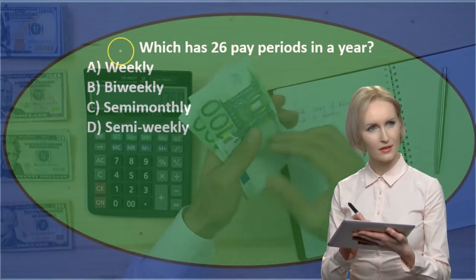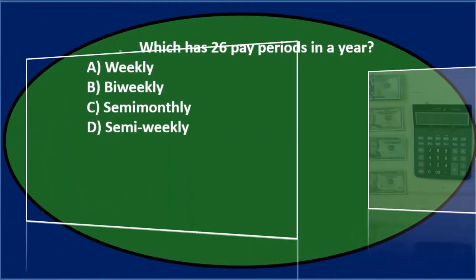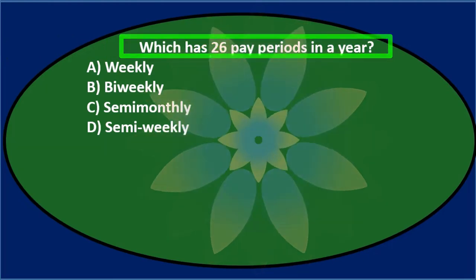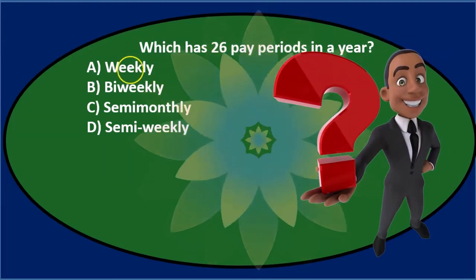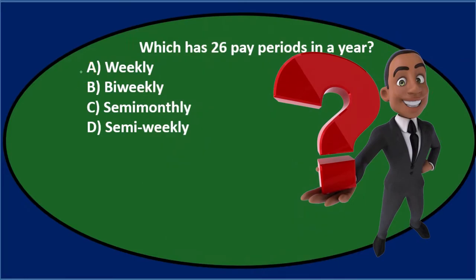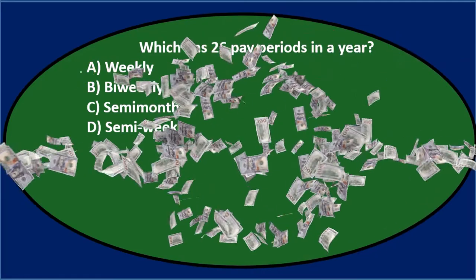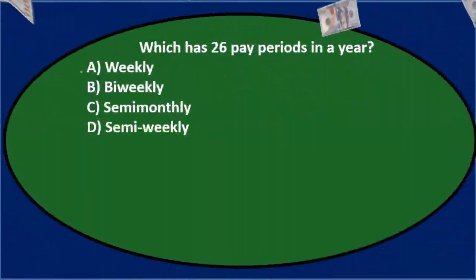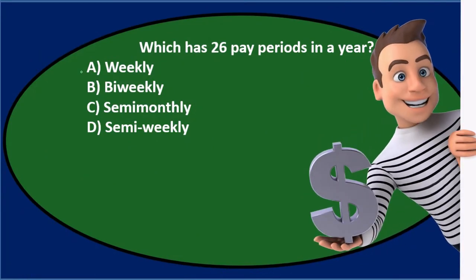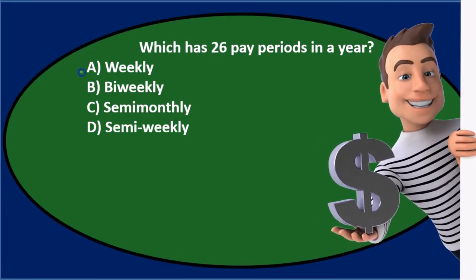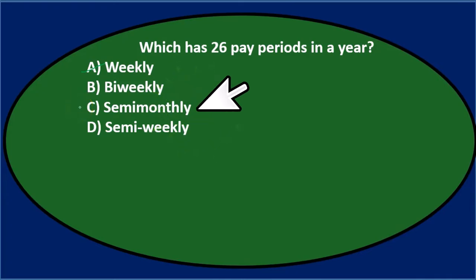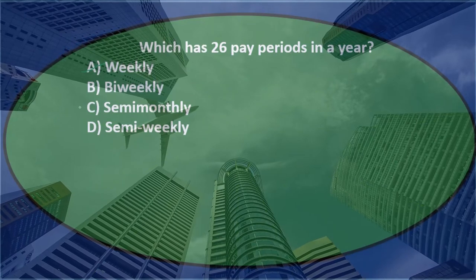Let's read through this again and use process of elimination. Which has 26 pay periods in a year? If we think about weekly — how many weeks are in a year? There are more than 26 weeks; it's about 52. So weekly is going to be much higher than 26, so that's not it. B says bi-weekly, maybe. C says semi-monthly, maybe — those two are very similar and that's probably where the confusion lies.